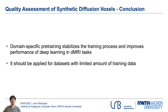To sum up, the domain-specific pre-training stabilizes the training process and improves the performance of deep learning in diffusion MRI tasks. Specifically, it should be applied in datasets with a limited amount of training data, such as small clinical studies.